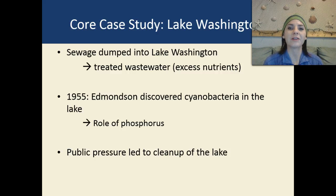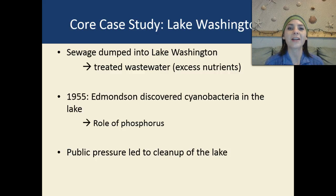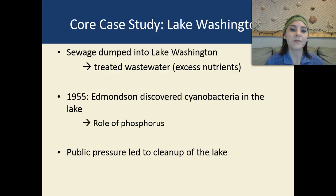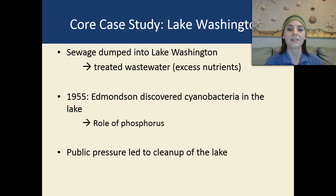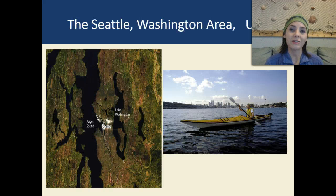So the core case study in this unit is Lake Washington. A ton of sewage was dumped into Lake Washington. It was from a treated wastewater facility, but because it was wastewater, it had a huge amount of excess nutrients — a lot of phosphorus, nitrogen waste, things like that. So in 1955, Edmondson discovered that there were cyanobacteria in the lake, and the cyanobacteria were directly related to the excess wastewater. The more nutrients, the more cyanobacteria there were. Eventually, public pressure led to the cleanup of the lake, and this is what it looks like today.